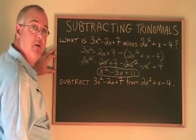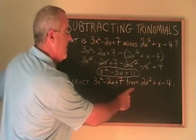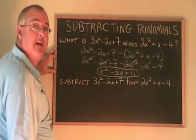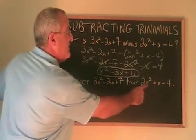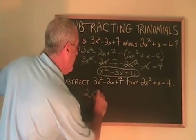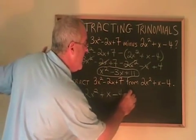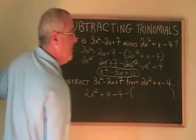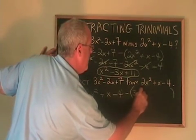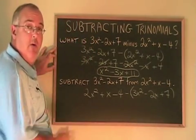Now, let's do the second question. It says, subtract 3x squared minus 2x plus 7 from 2x squared plus x minus 4. In this case, the trinomial that is having something subtracted from it is this one. So, we have to write it first. Then, we put a minus sign. And, we put the other trinomial in a bracket.